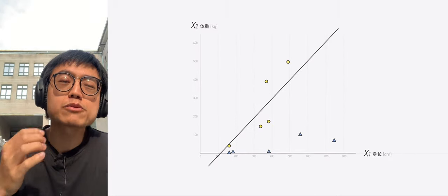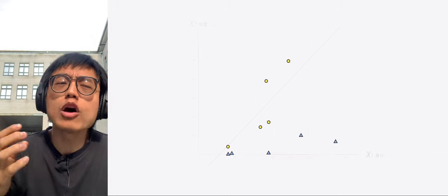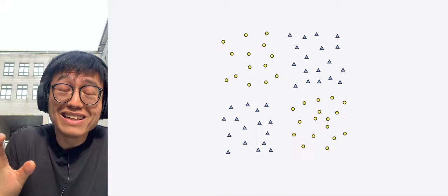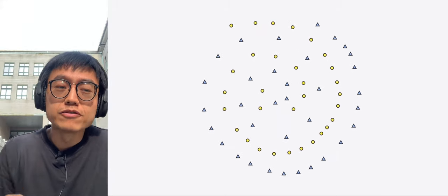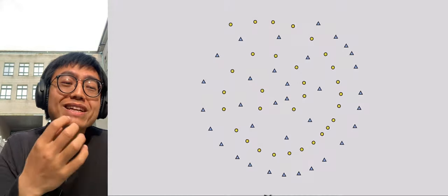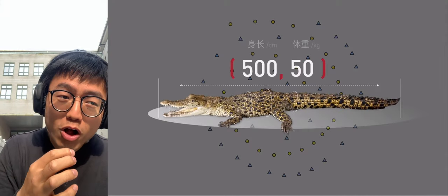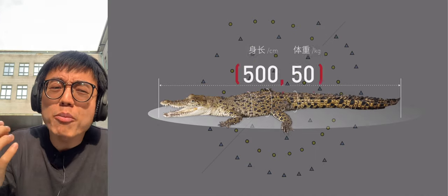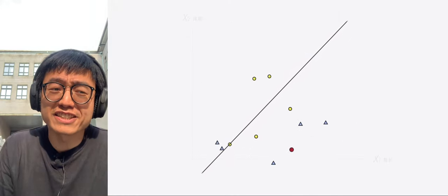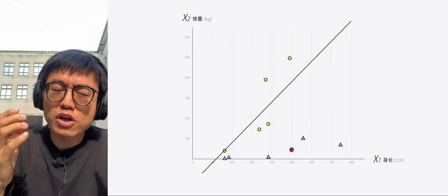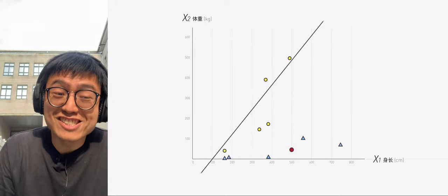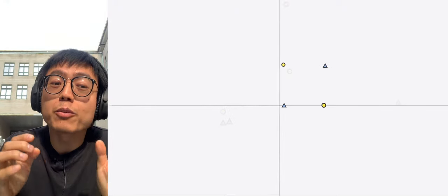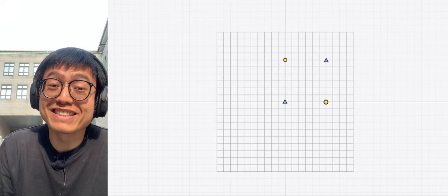A lot of data simply cannot be separated by a straight line, a plane or a hyperplane. For example, if we take a crocodile that is 500 cm long and weighs 50 kg as a sample, no matter how much the perceptron is adjusted, it will not be successful. To solve this problem, let's start by separating these four points. That's what we are going to talk about in the next episode.